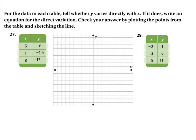Since we always get negative 3 over 2, the direct variation equation for this one is y equals negative 3 over 2 times x. It could also be written as y equals negative 1.5x. Those two forms are equivalent.